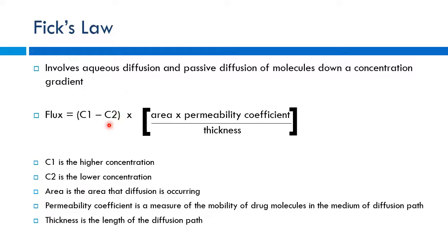Key variables in Fick's Law: the concentration gradient (C1 minus C2) — the bigger this is, the more flux. The area of diffusion matters too — a larger patch of skin means higher area and more drug diffusion versus a small membrane area. The permeability coefficient reflects how lipophilic the drug is; higher permeability means easier crossing and increased flux.